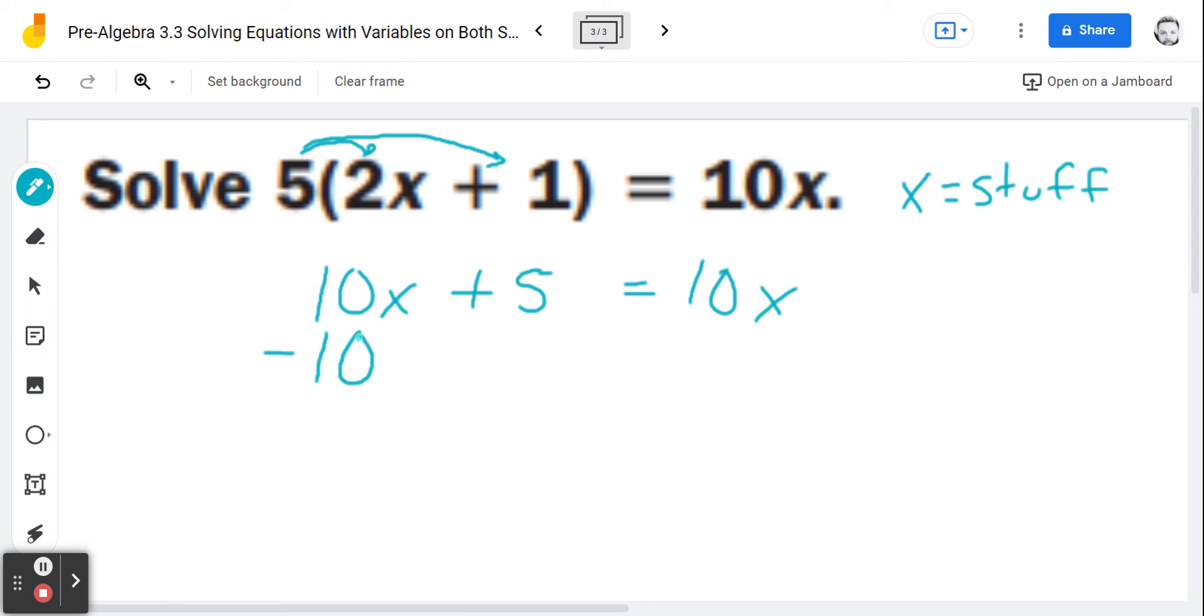Well, we subtract 10x from both sides. What's 10x minus 10x? Zero, right? What's zero plus 5? Five. What's 10x minus 10x? Zero.